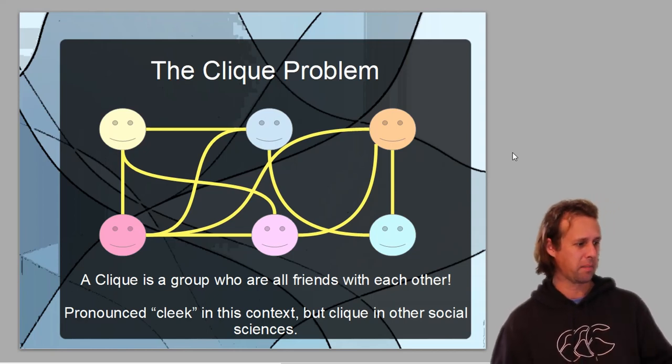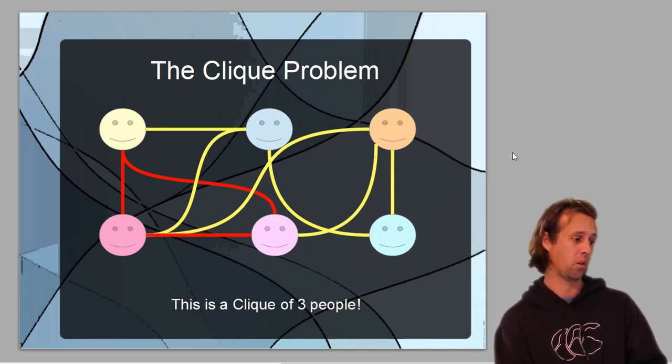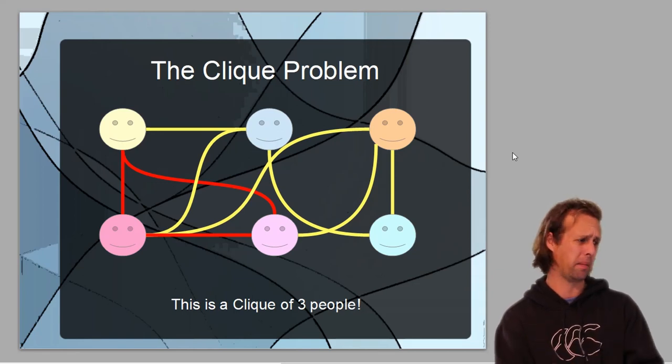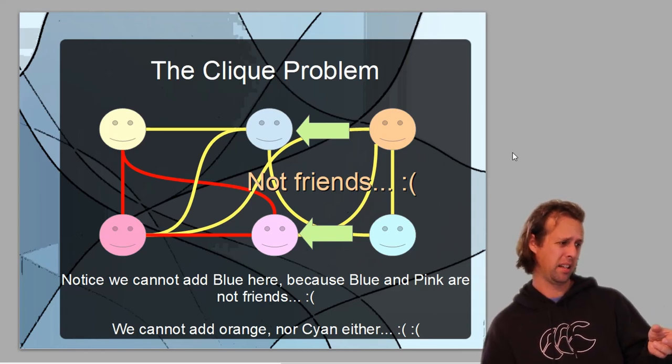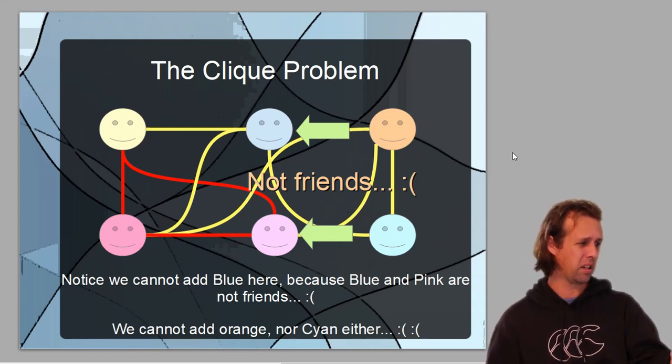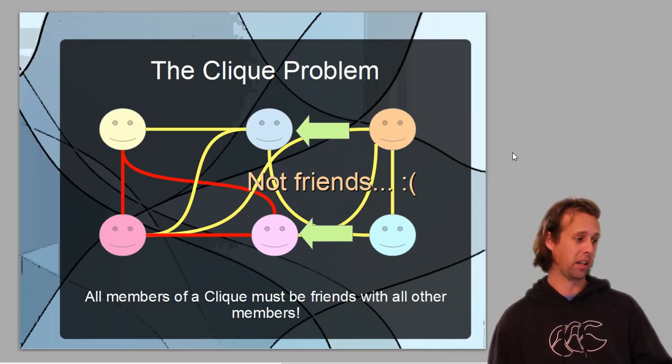A clique is a group of friends that are all connected with each other. It's pronounced a clique in this context, often in the mathematical problem, but I think in social sciences they often seem to say clique. But either way, same thing. Here what I've done is illustrated a small clique of three people within this little graph. You can see here that all of these people are connected to each other via the red lines. So they have other friends too, but for a clique, everyone has to be connected to everyone else.